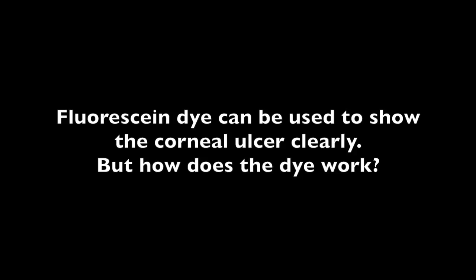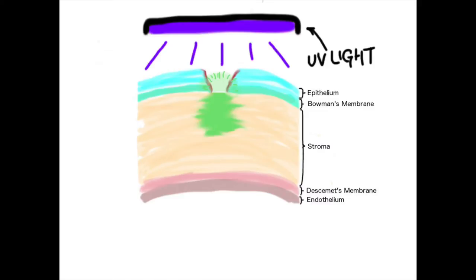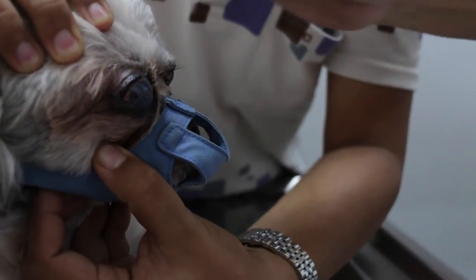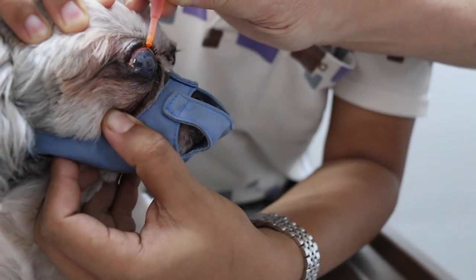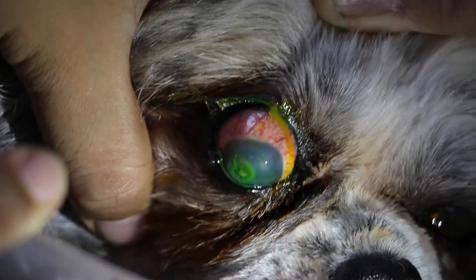Fluorescent dye can be used to show the corneal ulcer clearly, but how does the dye work? The dye is applied to the cornea — while it is not taken up by the intact epithelium, the exposed stroma absorbs it. When UV light is shone on the cornea, the fluorescence absorbed by the stroma glows green, allowing the vet to visualize the ulcer. In this video, the fluorescent dye is applied to the dog's eye and green fluorescence shows the ulcer clearly.